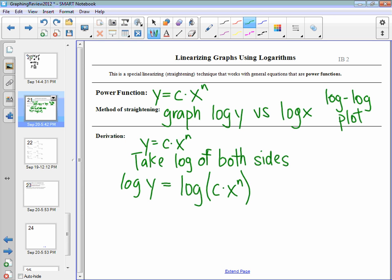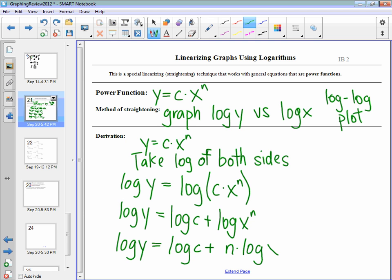So I take the log of both sides. Now, we know from our rules of logarithms that if you take the log of the product of two things, that's the same as adding the log of both those other things. So log of c plus log of x to the n. And then our other logarithm rule, if you have the variable you're taking the logarithm of to some power, that is the same as that power times log of that variable.